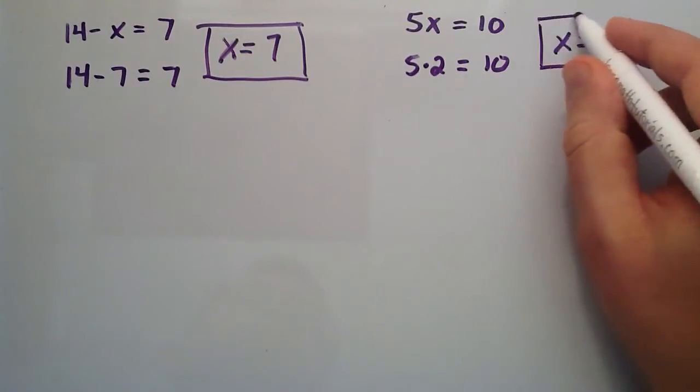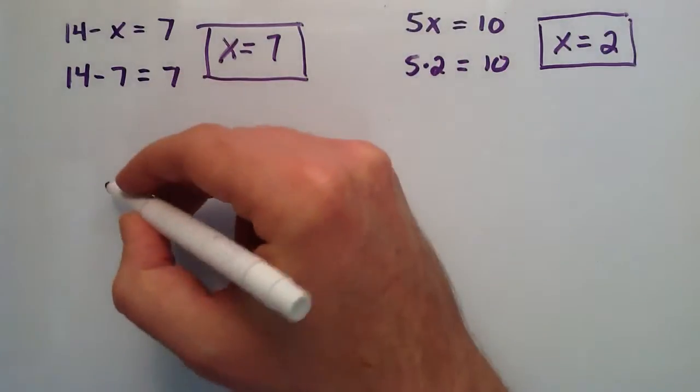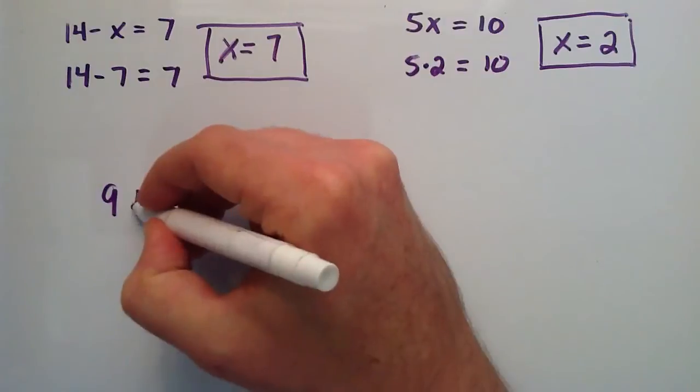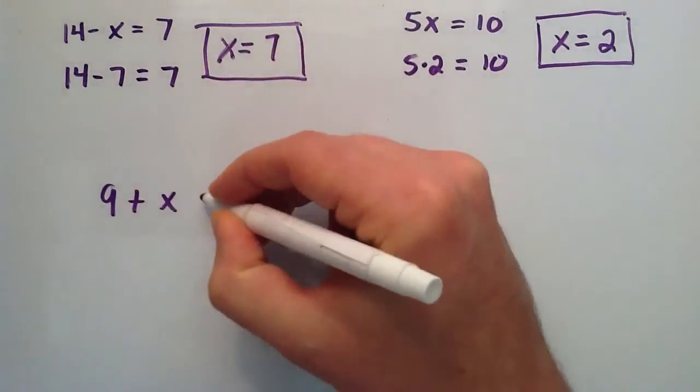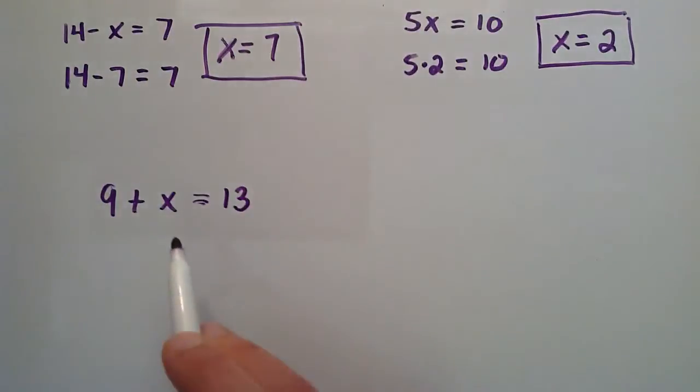Now let's solve the same types of equations, but let's use some algebra this time. Let's say that we have the equation 9 plus x is equal to 13. Now we're saying that the entire left hand side is equal to 13. Let's just pretend this says 13 equals 13.